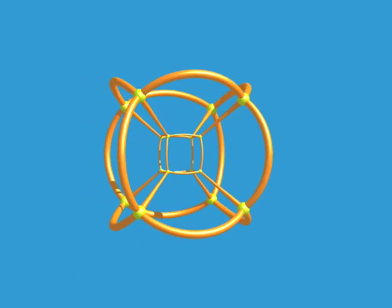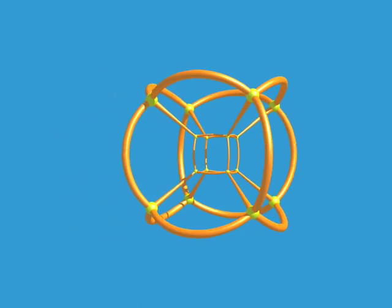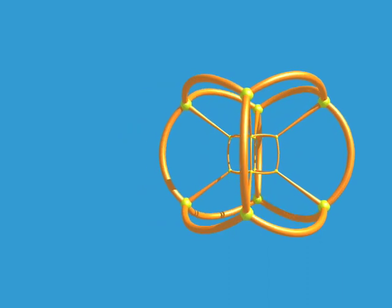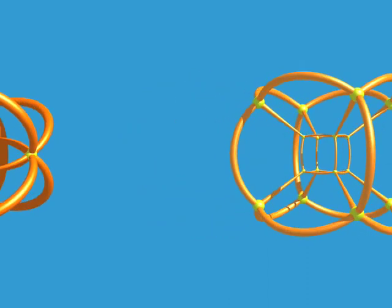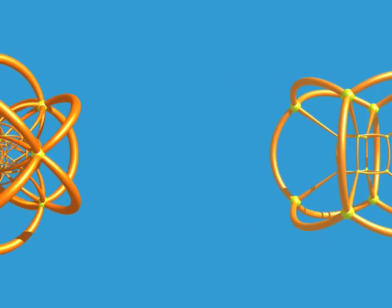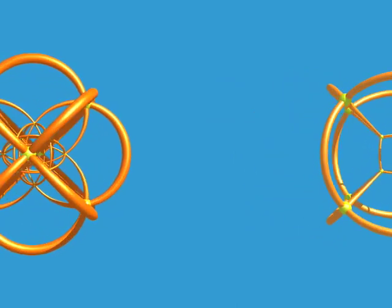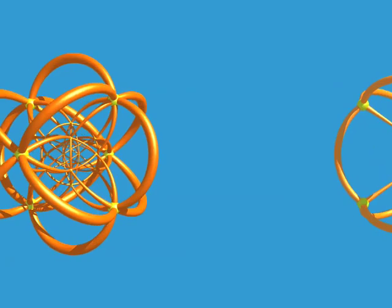Here's the hypercube. It's easy to recognize it from its 32 edges and its 16 vertices. Seeing things this way is so much easier than with the shadow method, or the three-dimensional cross-sections.